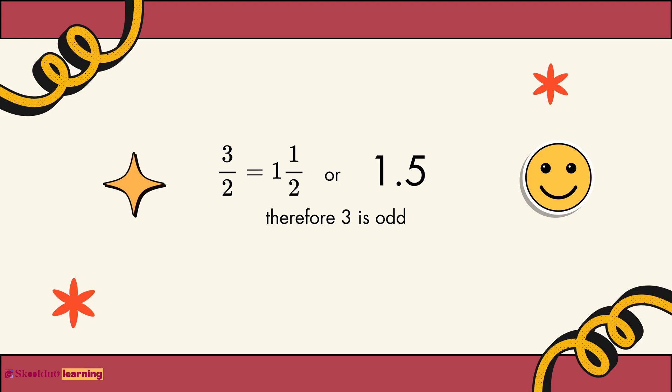3 divided by 2, which is equals to 1 and half, or 1.5, therefore 3 is odd.